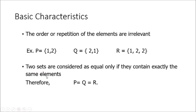The order and repetition of elements in a set are not important. Consider set P = {1, 2} and Q = {2, 1} — they contain the same elements in different order, but since order is irrelevant, P and Q are equal. Set R = {1, 2, 2, 2} — repetition is also irrelevant, so R is simply {1, 2}. Therefore all three sets P, Q, and R are equal to each other.